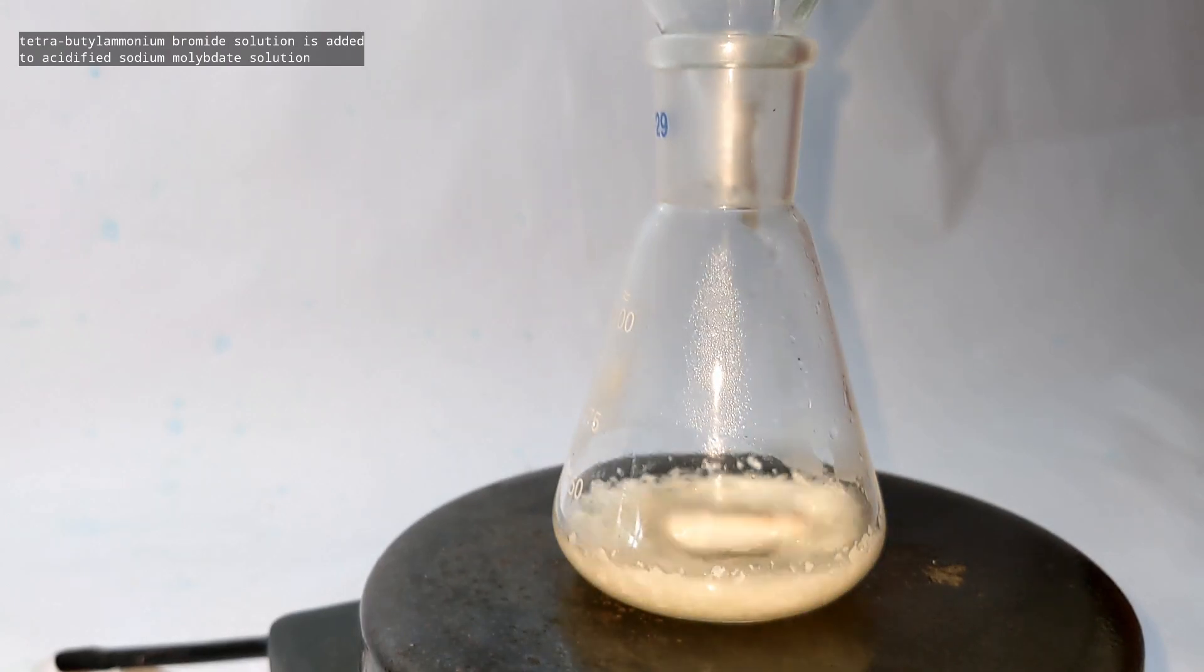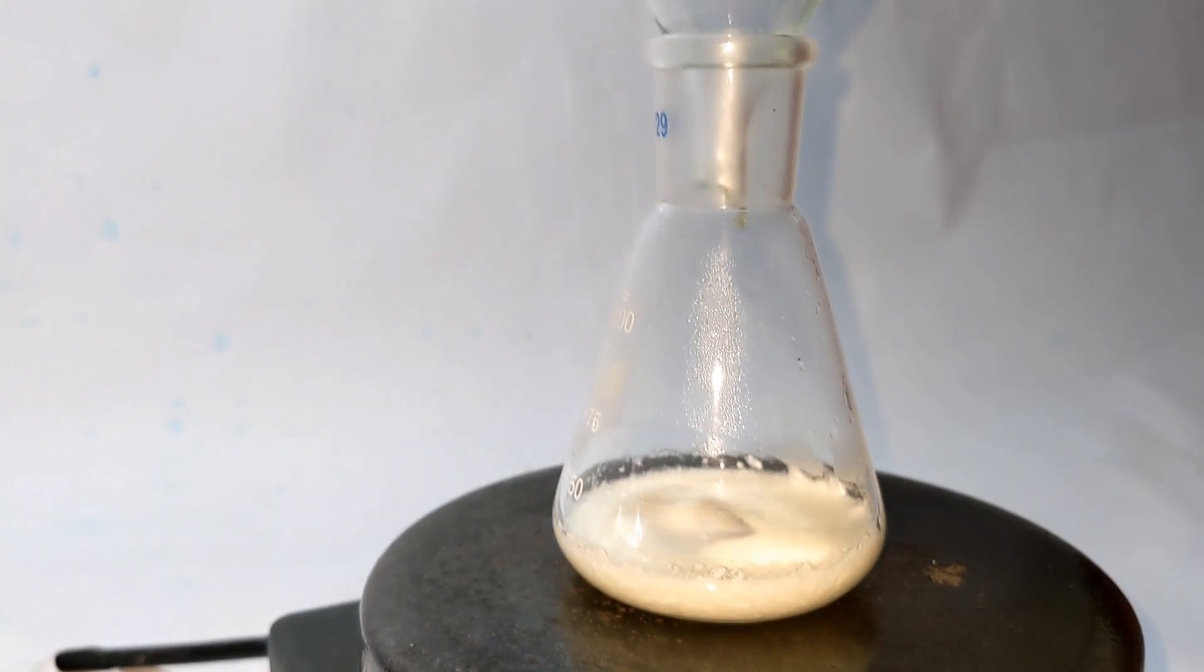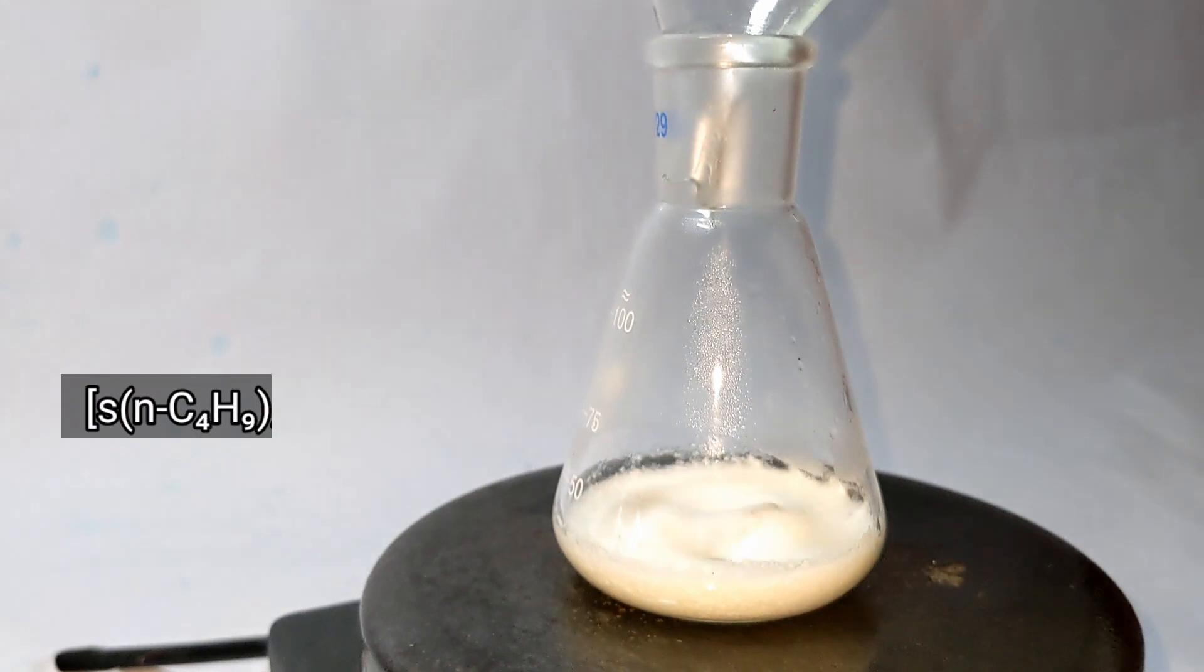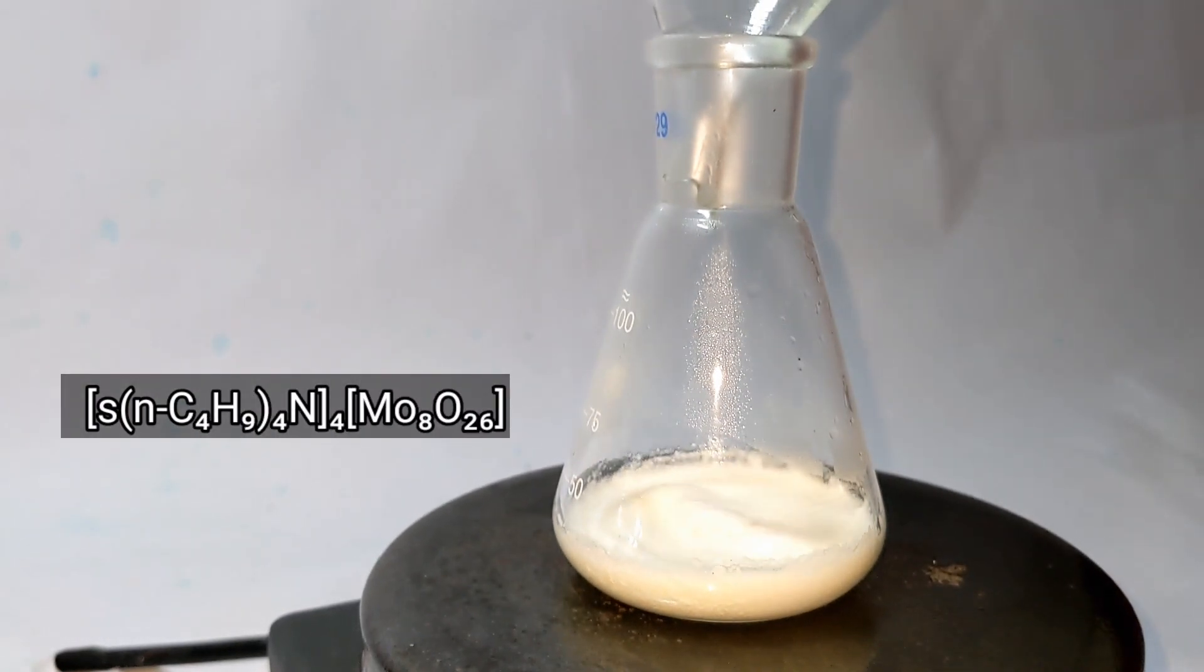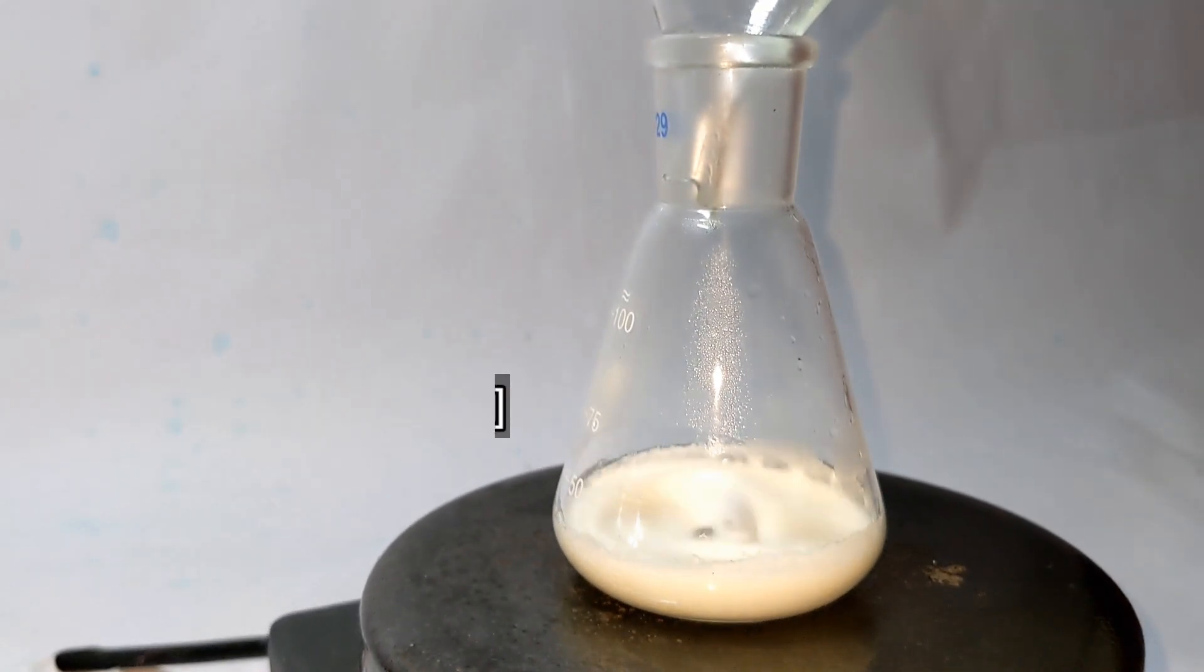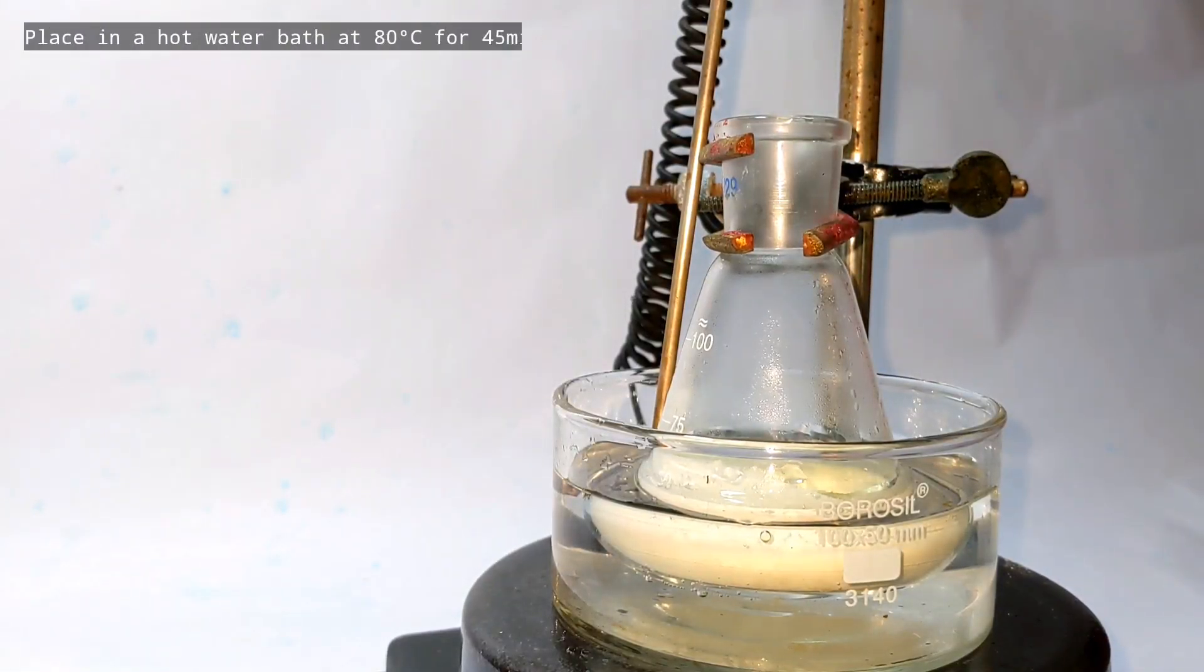Now with constant stirring, the tetrabutylammonium bromide solution was added to the acidified sodium molybdate solution. Immediately you will see the formation of a white precipitate, and that is tetrabutylammonium octamolybdate.